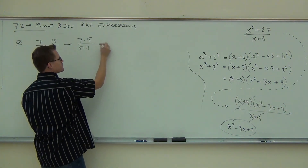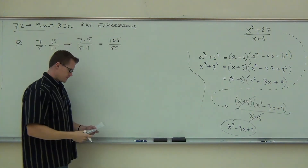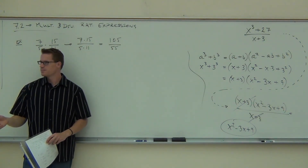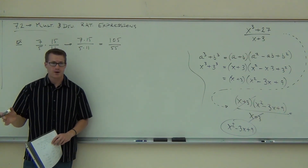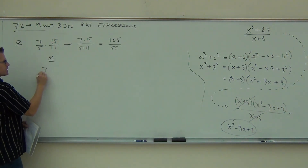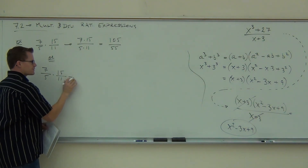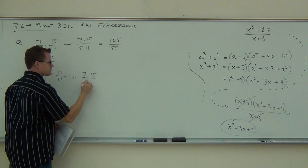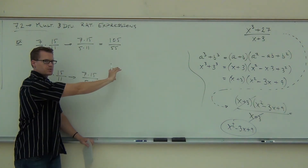We just go straight across and we get something like 105 over 55. Then you'd have to simplify it if you did it this way. But there's really another option — this is probably what you prefer. You still write it as 7 times 15 over 5 times 11, but instead of going through with that process, notice what we've just done.